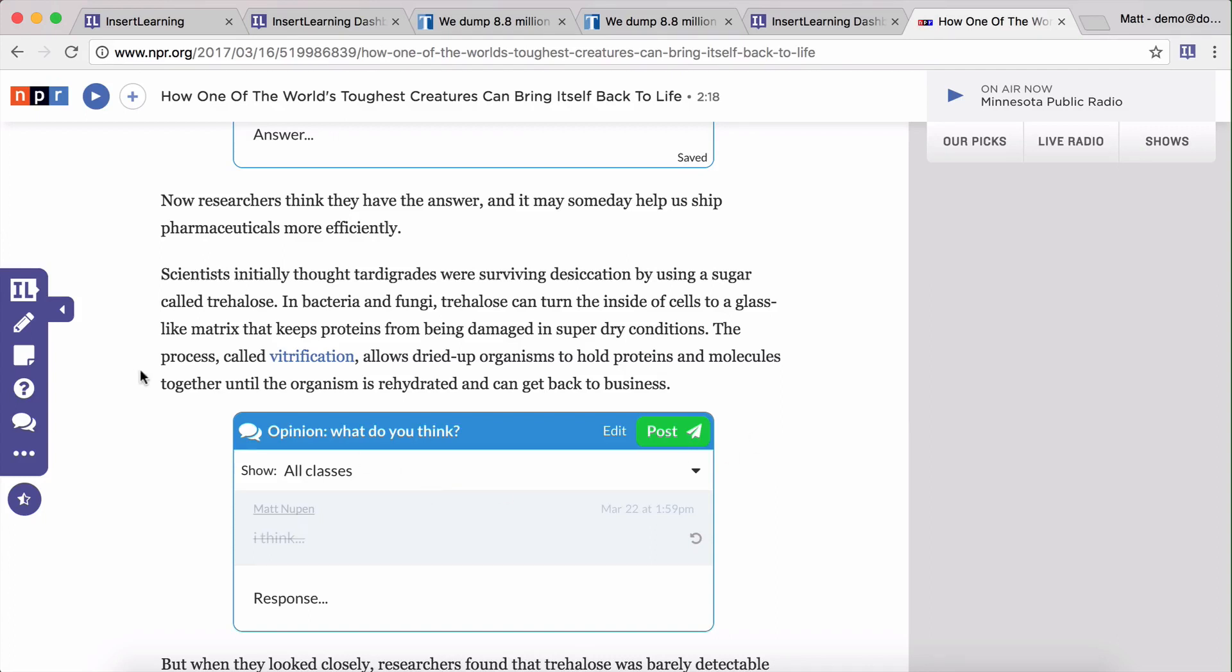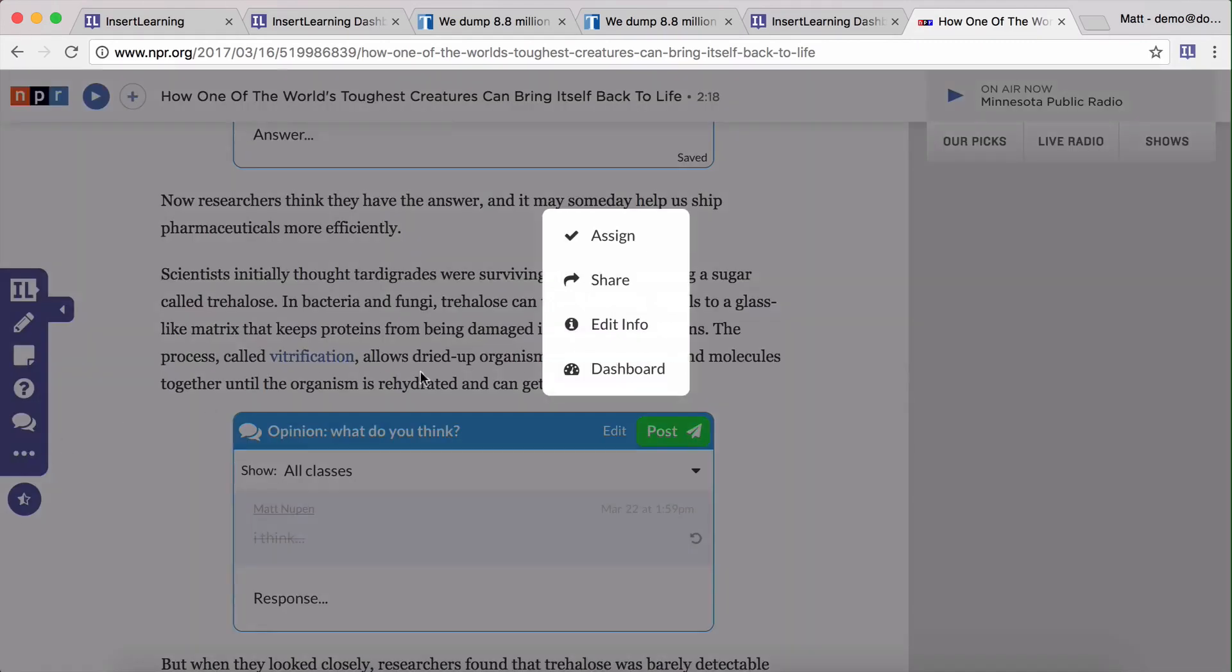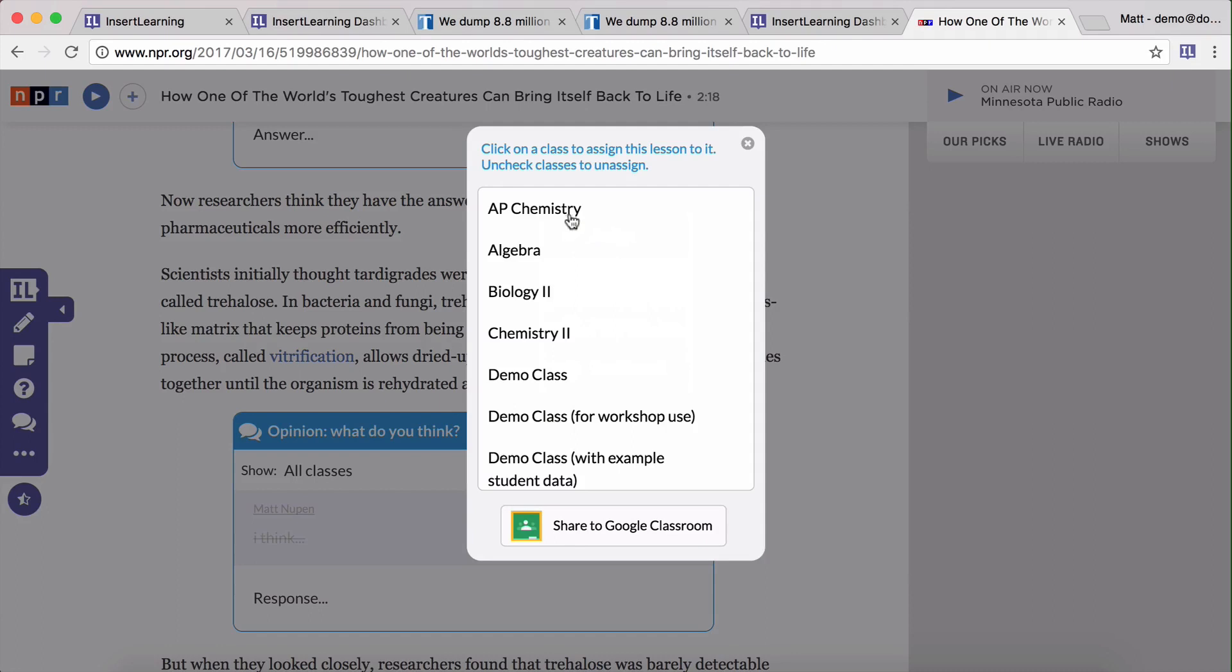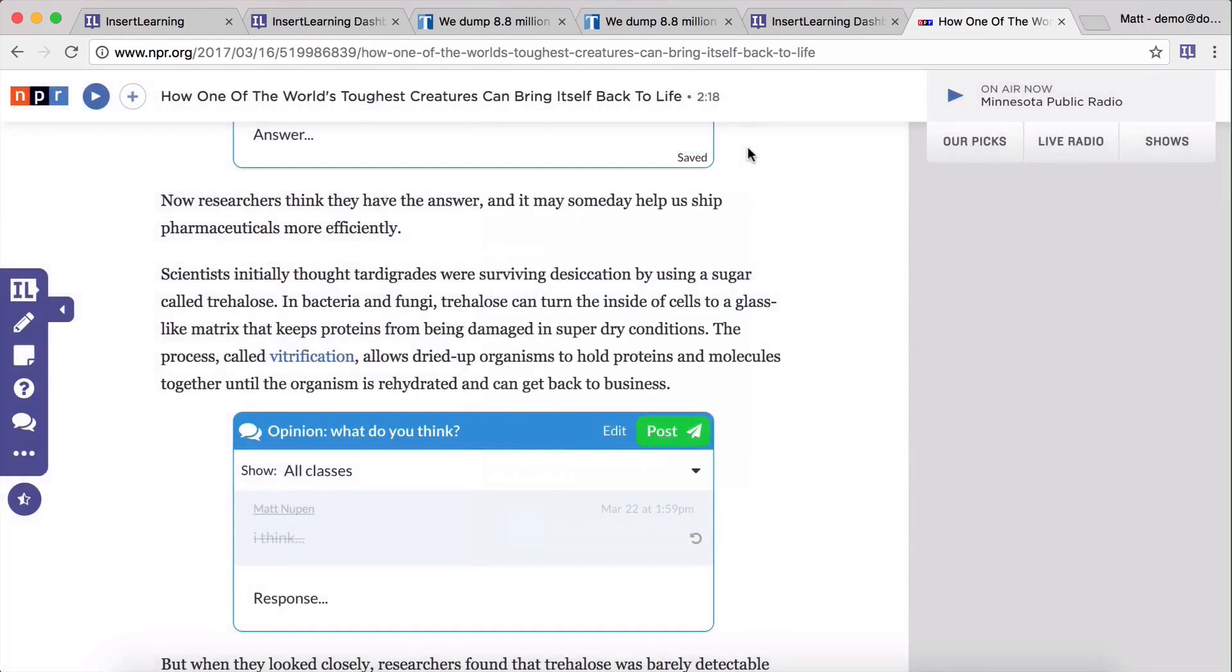All right, well, I think our lesson is ready to go. So I'm going to click on the little options here for our lesson. And here you can see a couple of different things. So you can assign it, you can share it out to other teachers, you can edit the title, and you can also go back to the dashboard. So I'm just going to assign our lesson. I'm going to send this one to biology. You can assign it also to Google Classroom directly, it makes it real simple, even import your student roster. And then that's it.